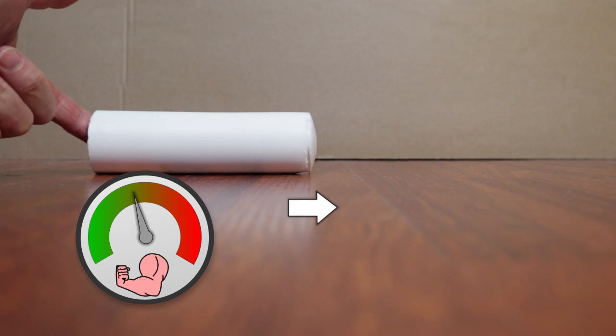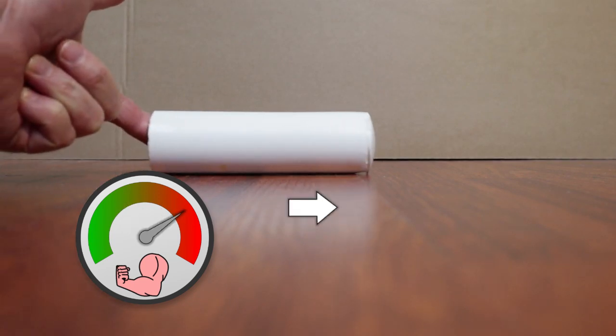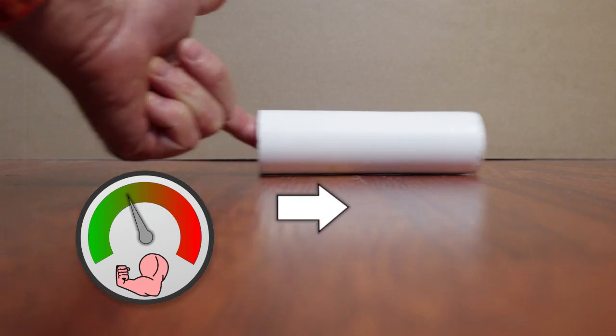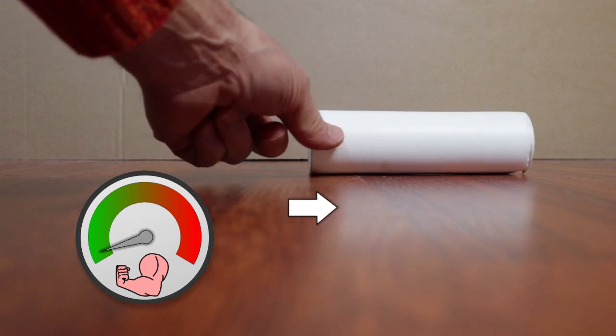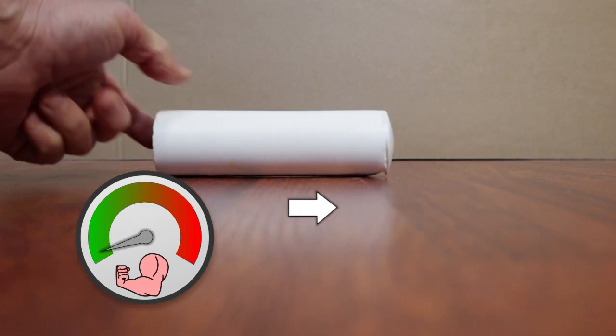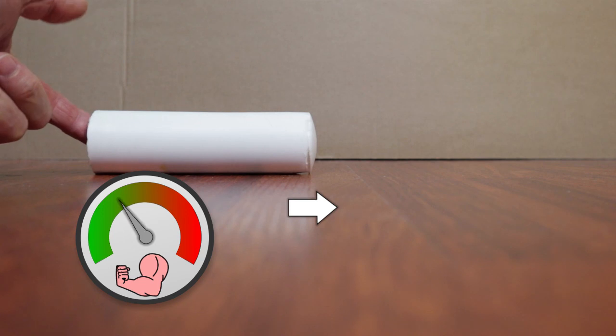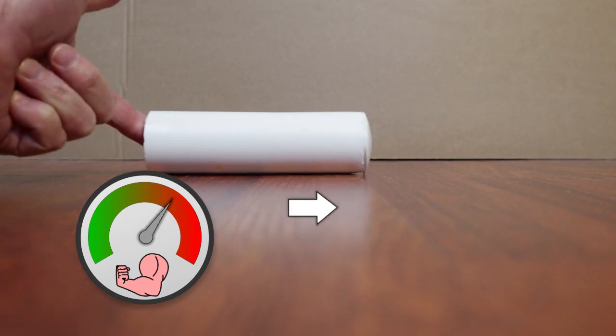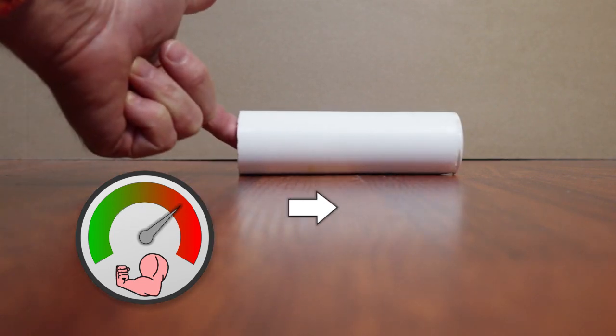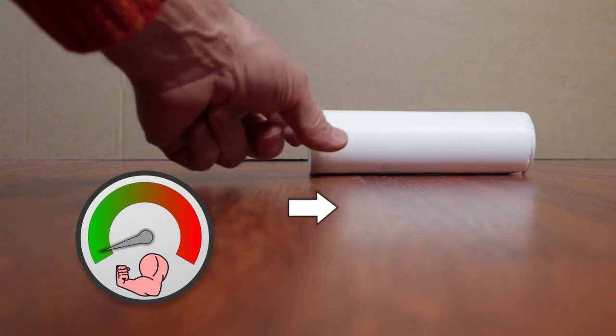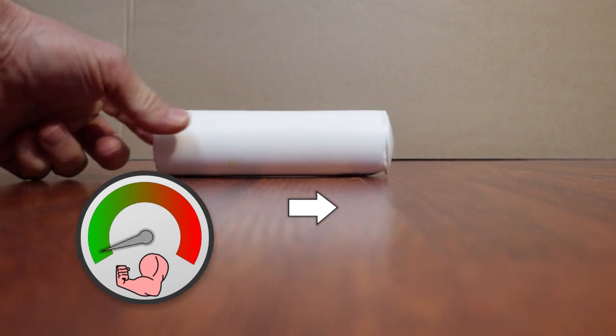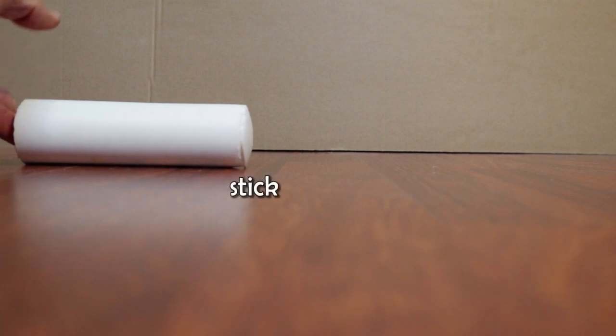When static friction is greater than dynamic friction, at first we need a larger force to move the bodies. However, when the bodies start to move, the friction drops suddenly. To control the speed, the force must be reduced, but this causes a rise in friction which in turn requires more force to overcome it, and so forth.